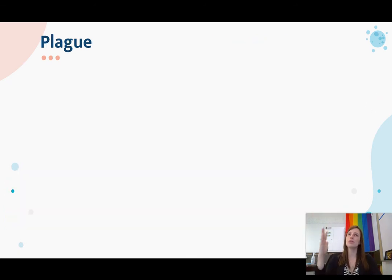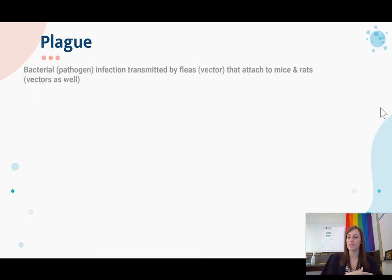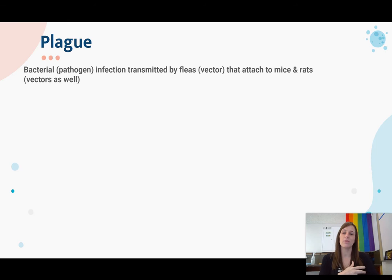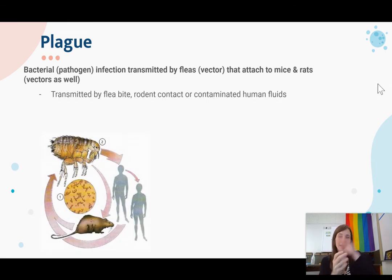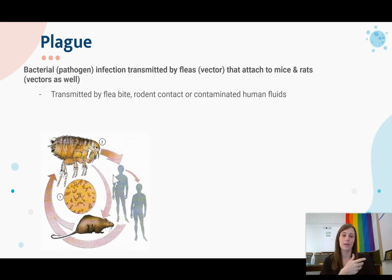Now we're going to talk through specific types of infectious diseases — important ones globally, even if we might not see them as much in the United States. The first one is the plague. This is a bacterial infection — so the bacteria is the pathogen — that is transmitted by fleas, which are the vector. Fleas can attach to mice and rats, but they can also jump to us. So if fleas are living on rats and the rats are around us, a flea can hop off the rat, bite us, and we can end up getting the plague.